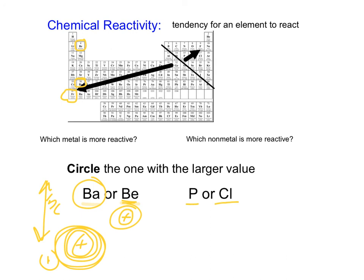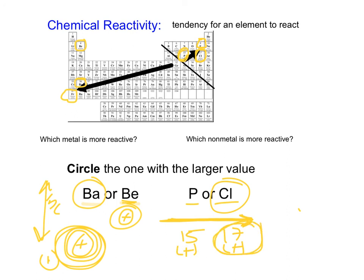Phosphorus and chlorine are both non-metals on the same energy level, and we know the most reactive non-metal is fluorine. Chlorine is clearly closer to fluorine. The why is effective nuclear charge — going across horizontally, it's a difference of protons: 17 positives for chlorine versus 15 for phosphorus. The 17 positives create a greater pull, which is helpful when you're trying to attract something negative, making chlorine more reactive.